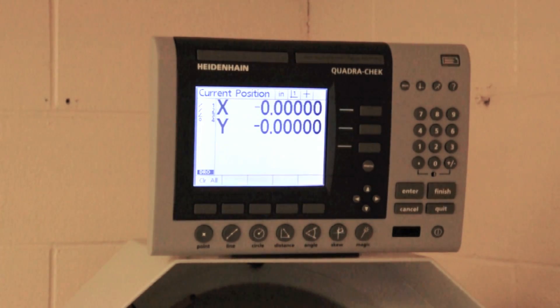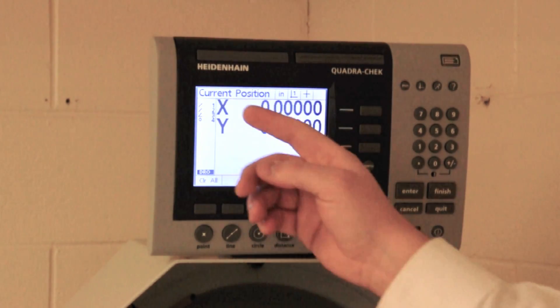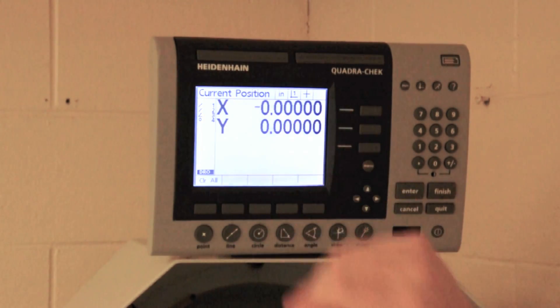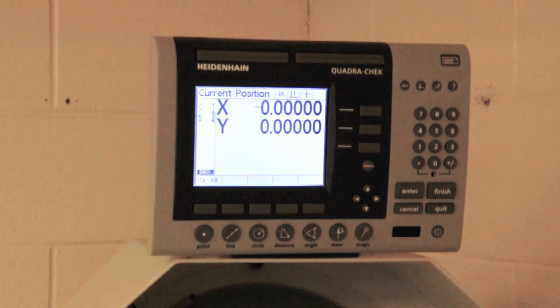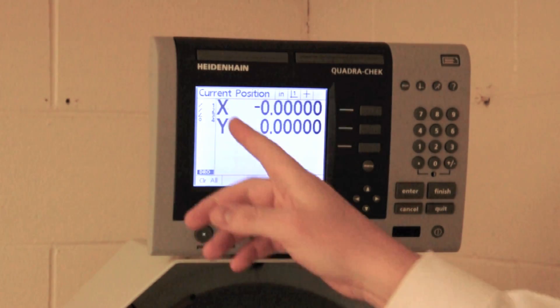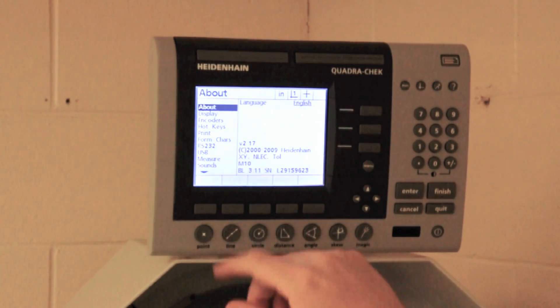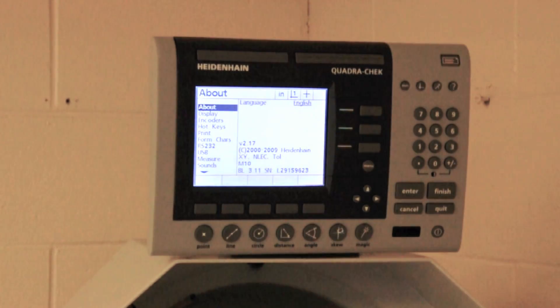On the Heidenheim QuadraCheck display, the previously taken measurements are displayed along the left here, while the front and center are the current X and Y position. And at any time, the previously taken readings can be output through either RS-232 or USB connections.